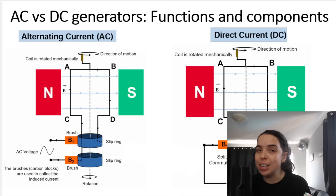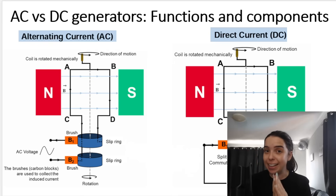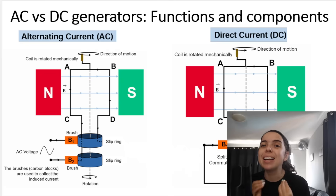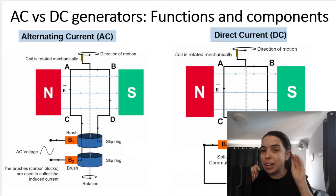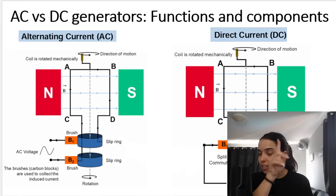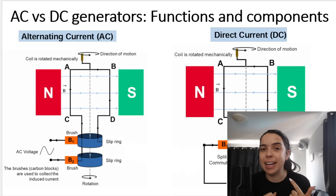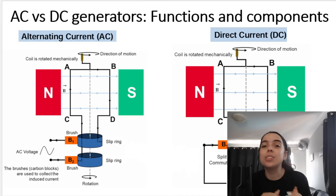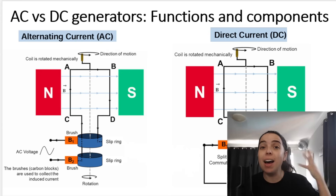In the previous video, we learned that generators are machines that convert mechanical energy into electrical energy. We also learned that they operate on the principle of Faraday's law of electromagnetic induction — it's all about relative motion between a magnetic field created by magnets and a coil, or armature. When there's relative movement, this creates a changing magnetic flux, which enables an EMF, a voltage, to be induced, creating a current inside the coil that we can use to power appliances.